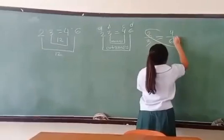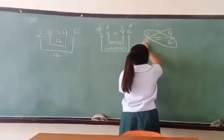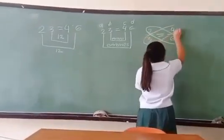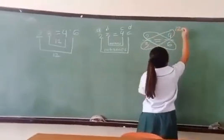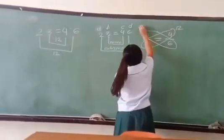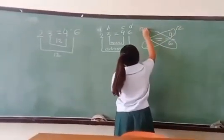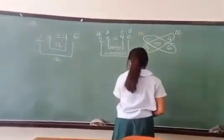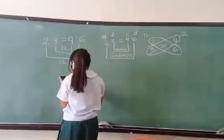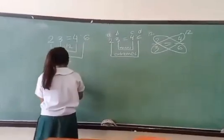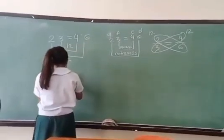For example, 2 over 3 equals 4 over 6 — cross multiply. It's the same solution.